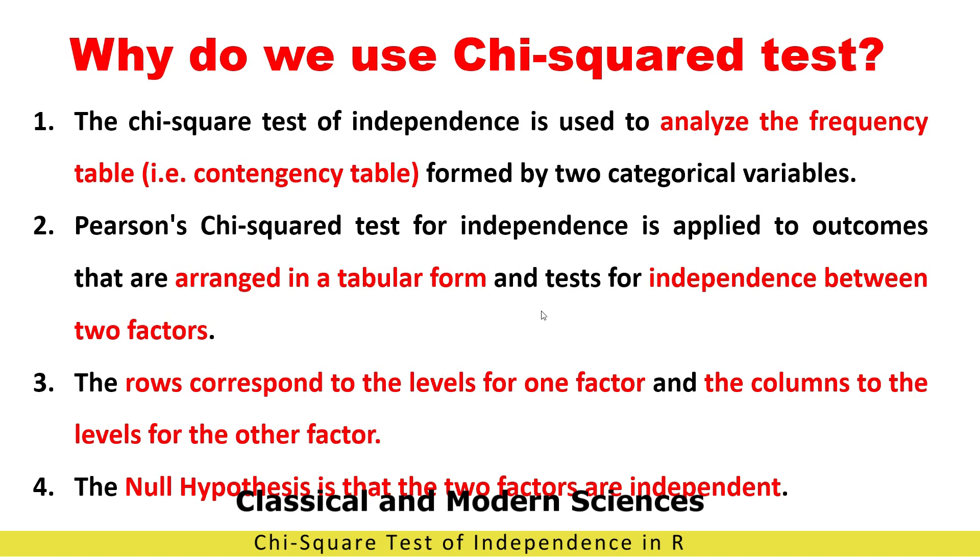The Pearson chi-square test for independence is applied to outcomes that are arranged in tabular form and tests for independence between two factors. The rows correspond to the level of one factor and the columns to the level of another factor.